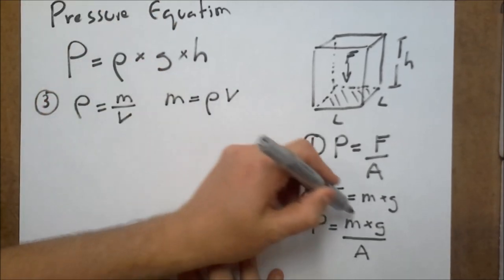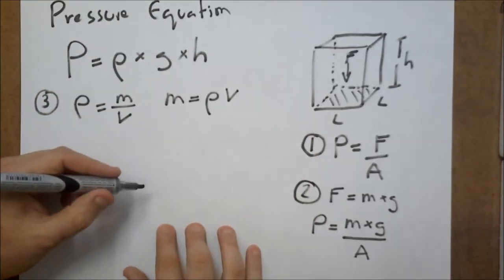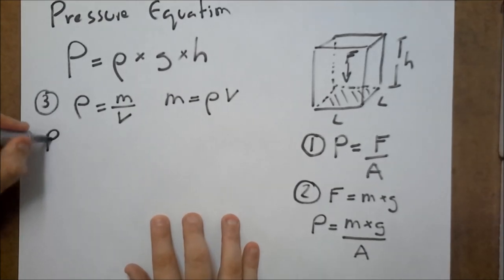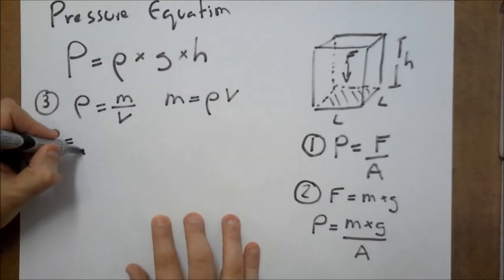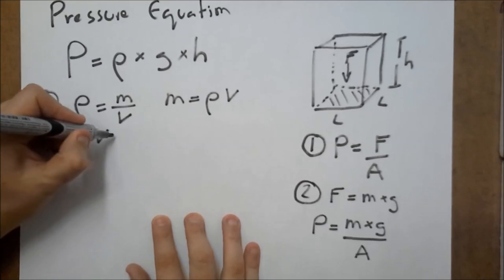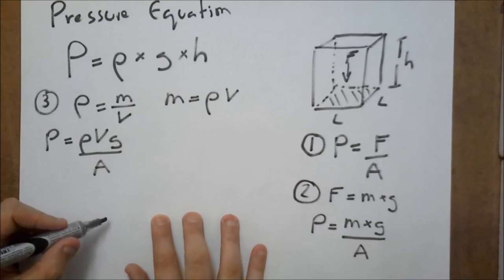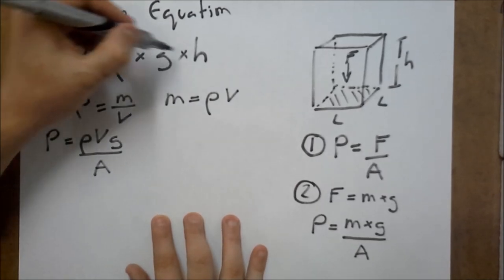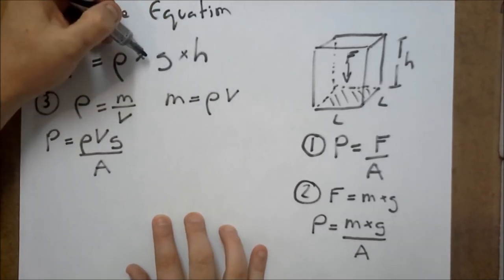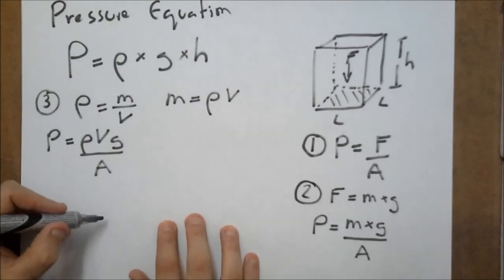And we're going to substitute that into here. So, so far now, pressure is equal to rho v g over a. So, so far we've got rho and we've got g in our equation. But how do we get h, the height?